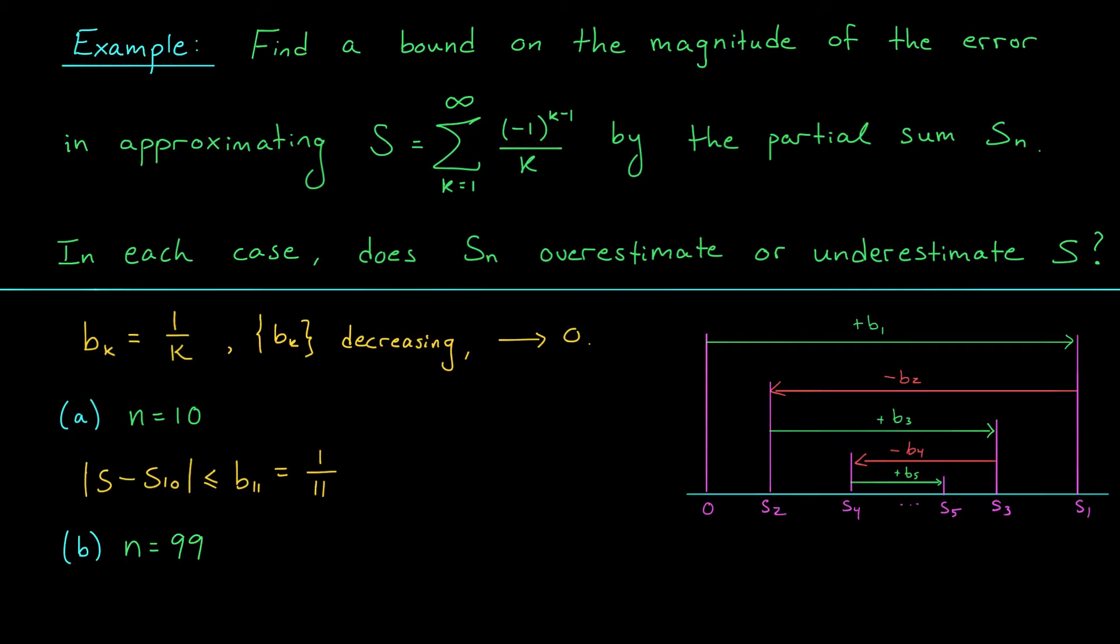To help us to decide whether this is an overestimation or an underestimation, I've included the diagram from our first slide. The terms in our series follow the same sign pattern as in this diagram, positive, negative, positive, negative, and so on. Therefore, when we add our last term, minus 1 over 10 to the partial sum, we'll end up on the left side of the true value of S. Therefore, S10 is going to be an underestimation.